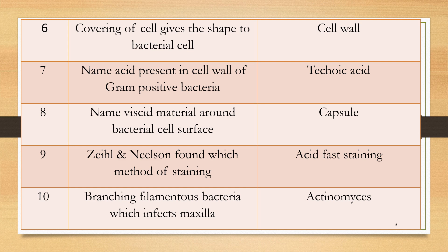Question 6: What covering of the cell gives the shape to the bacterial cell? The covering gives the exact shape of the cell so that shape will not be deformed or changed. Answer: The cell wall provides shape to the bacterial cell.